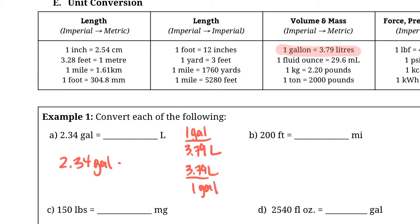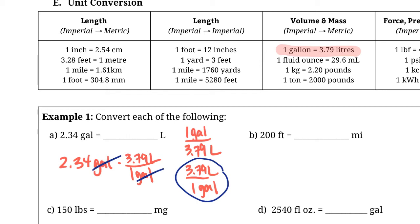We want to get rid of the gallons by canceling them out. To cancel gallons, we put gallons in the denominator — so we choose 3.79 liters per one gallon. The gallons cancel, leaving us with liters. The numbers tell us to do 2.34 × 3.79, which gives 8.87 liters, rounded to three significant figures matching the original question.